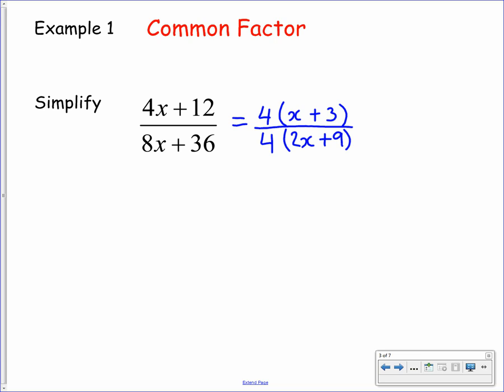From here you can see this is written as a product of factors, and both have a common factor of 4. At this point we can divide by 4 on the numerator and denominator to get our finalized expression in its simplest form: x plus 3 over 2x plus 9. Pause the video and copy this example into your jotter.